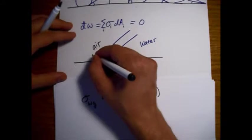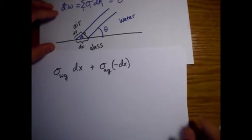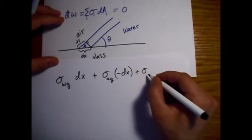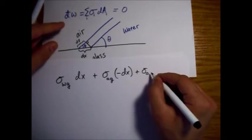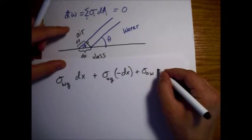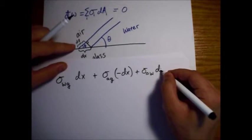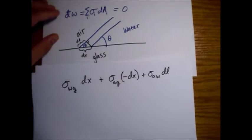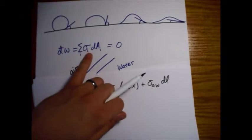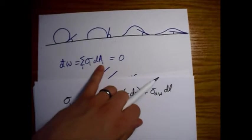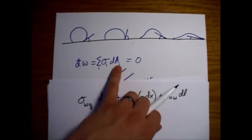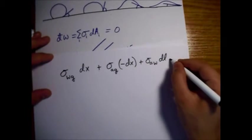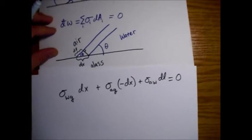I'll just call that DL for now. So, it grew. So, it's positive. So, we have a sigma, and this is air and water, and it's positive, DL. This is our sum of our surface tensions multiplied by the change in the area. So, this is equal to zero for equilibrium.